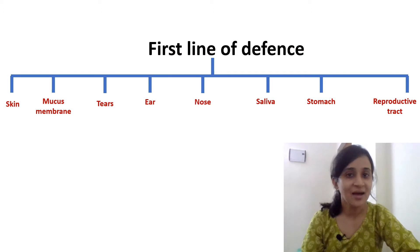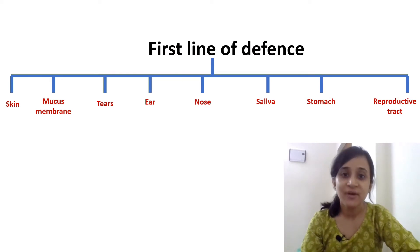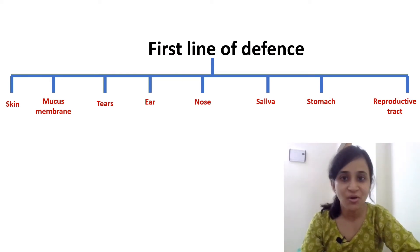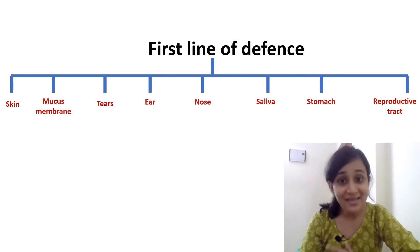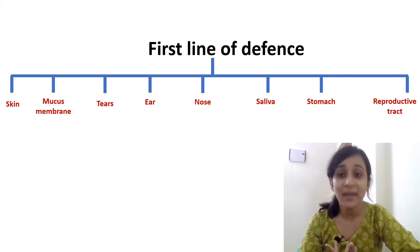In the last lecture, we have learnt that Innate Immunity provides the first and second line of defense. The first line of defense is nothing but prevention of the entry of microorganisms in our body. Our immune system tries to inhibit foreign pathogens from entering our body.